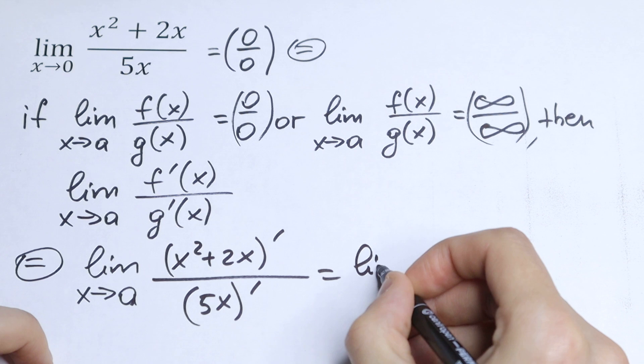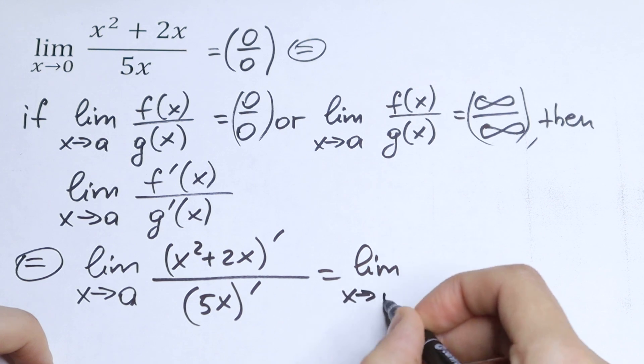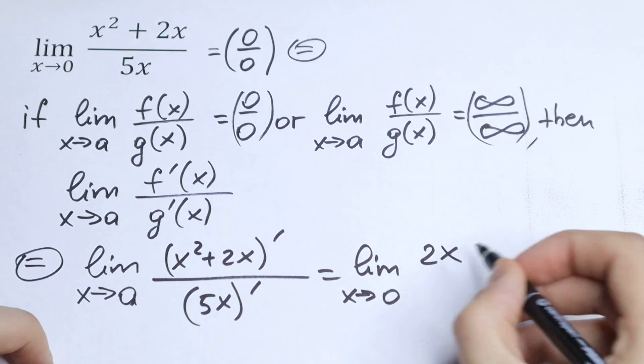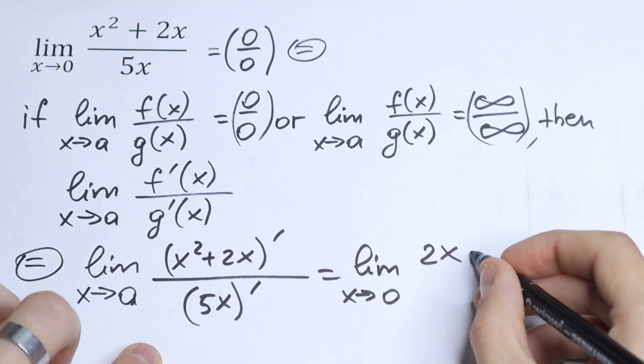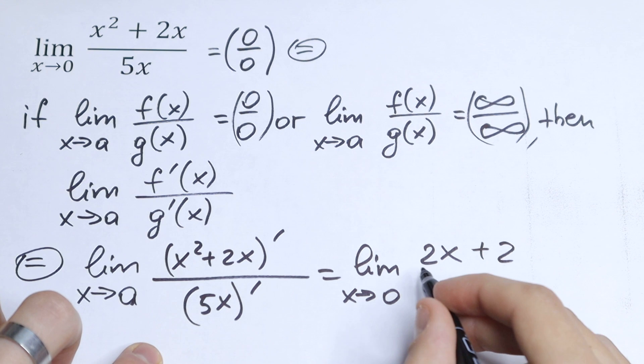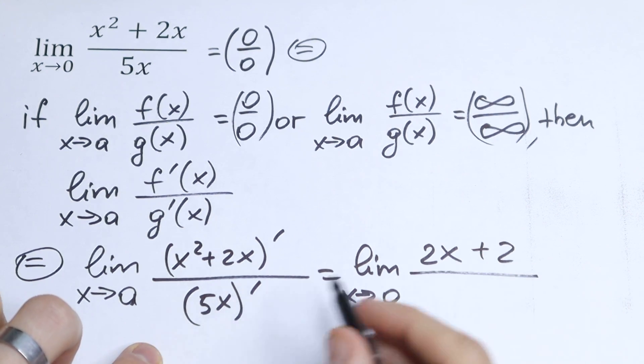Limit x approaches to 0, we'll have 2x. And right here derivative of that x will be 1, 2 times 1 will be 2, plus 2. And the same as right here will be 5.